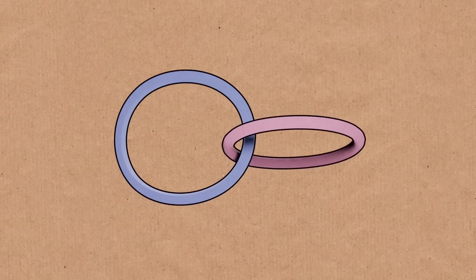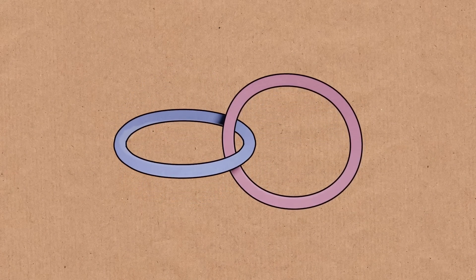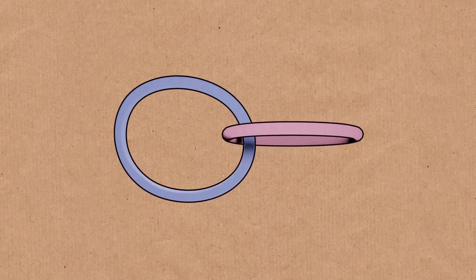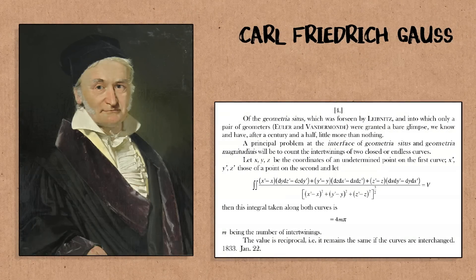I haven't even gotten around to discussing links, which is when you have two different circles that can be linked to each other. There is a corresponding classification theory for links, and that goes back to Gauss in the early 19th century. Gauss studied what we call the linking number: if you have a link with two components, two circles, you can measure how many times one circle is going through the other circle, and that's an invariant.